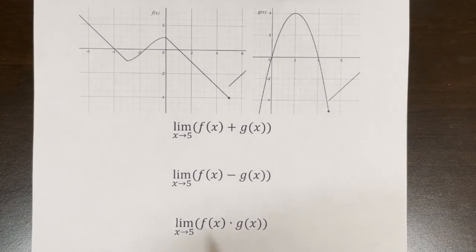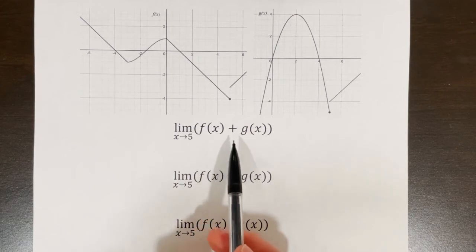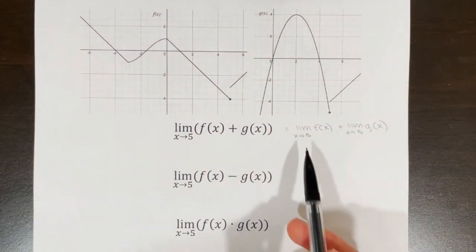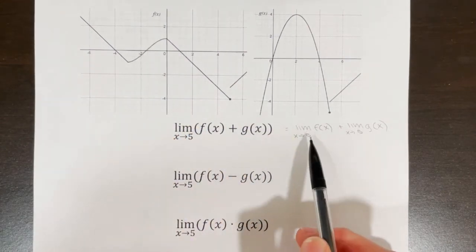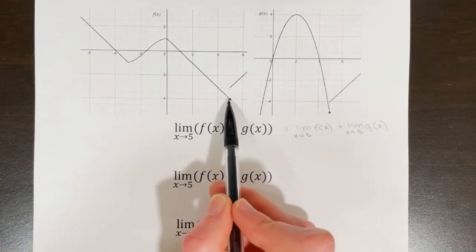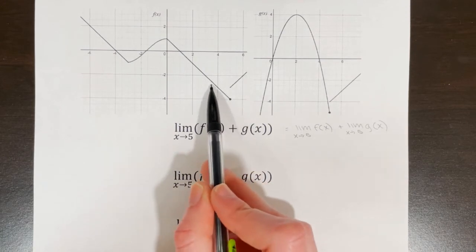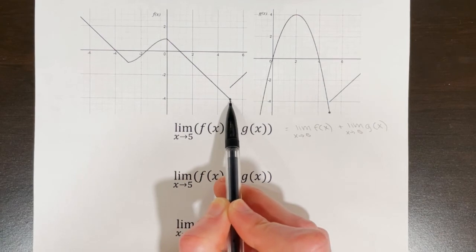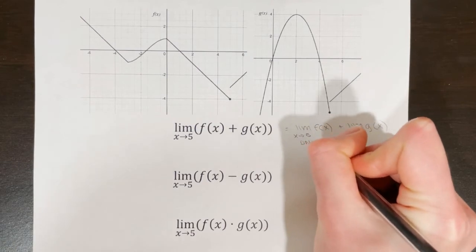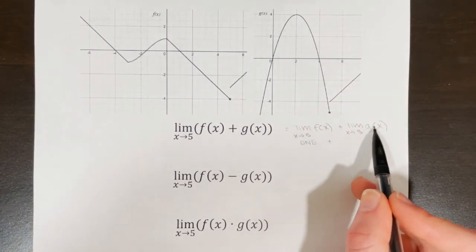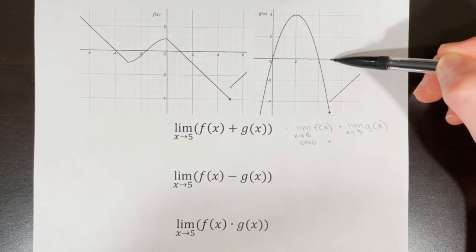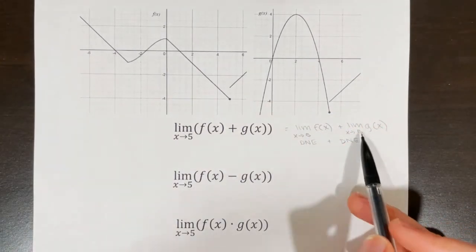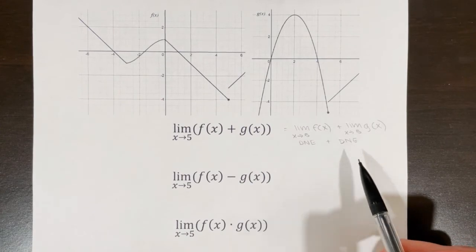This is a trickier example. I'm evaluating the limit as x goes to 5 of f(x) plus g(x), so I split it into two separate limits. For f(x), this is a piecewise jump: approaching from the right gives negative 3, but from the left gives negative 4, so the limit of f(x) does not exist. Similarly, g(x) at x=5 has different left and right values, so that limit also does not exist. So we're getting DNE plus DNE.